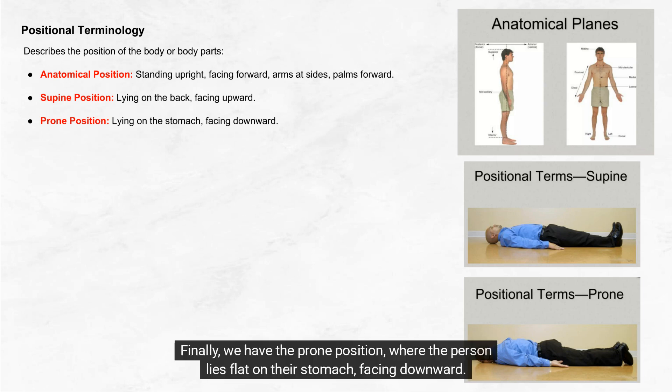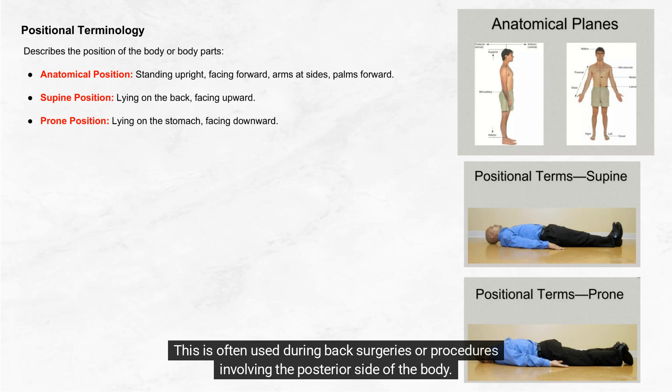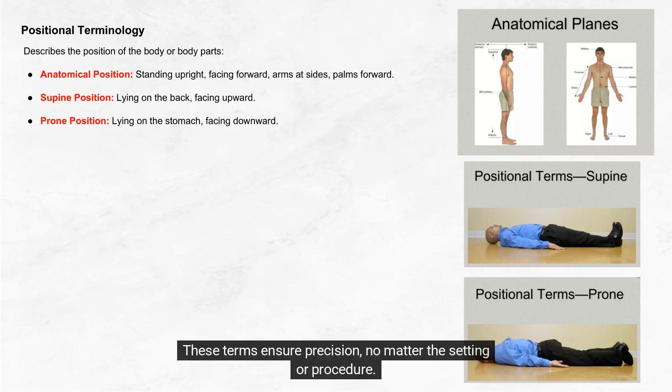Finally, we have the prone position, where the person lies flat on their stomach facing downward. This is often used during back surgeries or procedures involving the posterior side of the body. These terms ensure precision, no matter the setting or procedure.